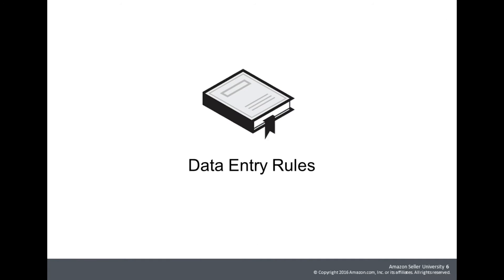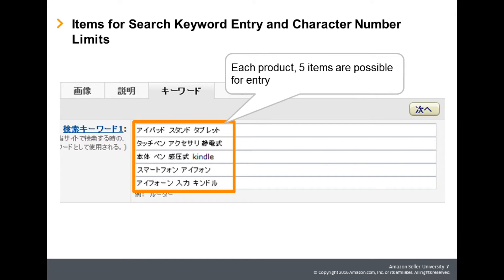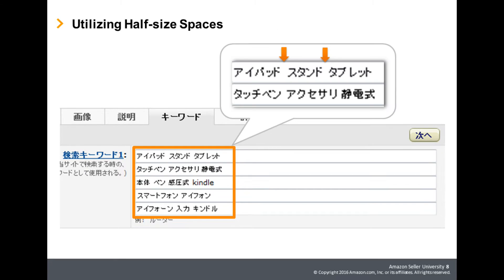Next, let's explain the data entry rules for search keywords. There are several rules for entry of search keywords. Five items are possible for entry of each product's search keywords. In configuring terms and separation of terms for search keywords, use half-size spaces. If they are not separated with the half-size space, it will not be recognized as a term.